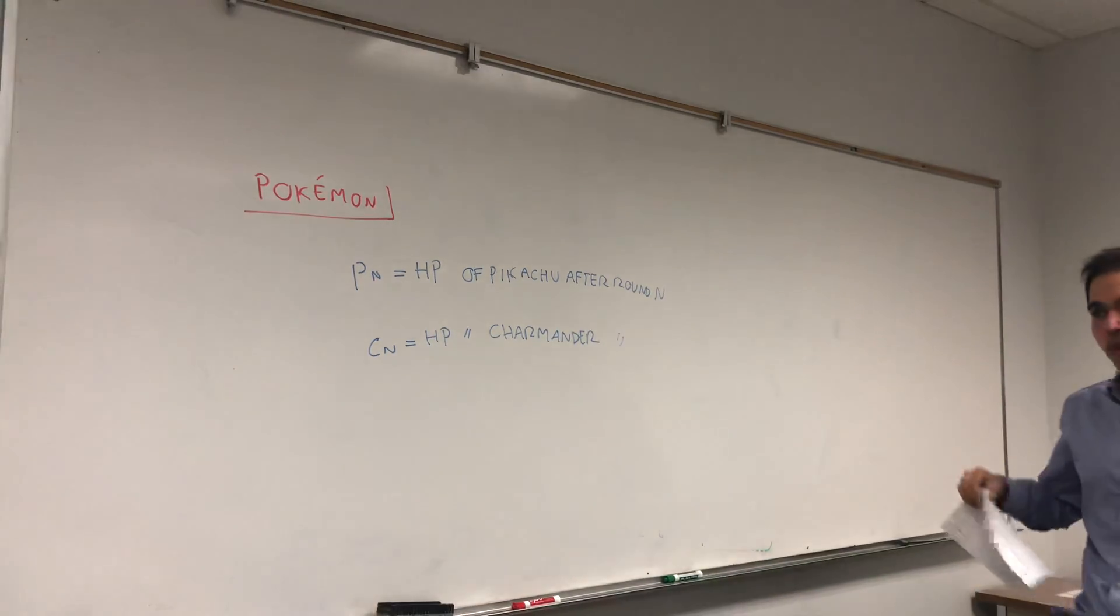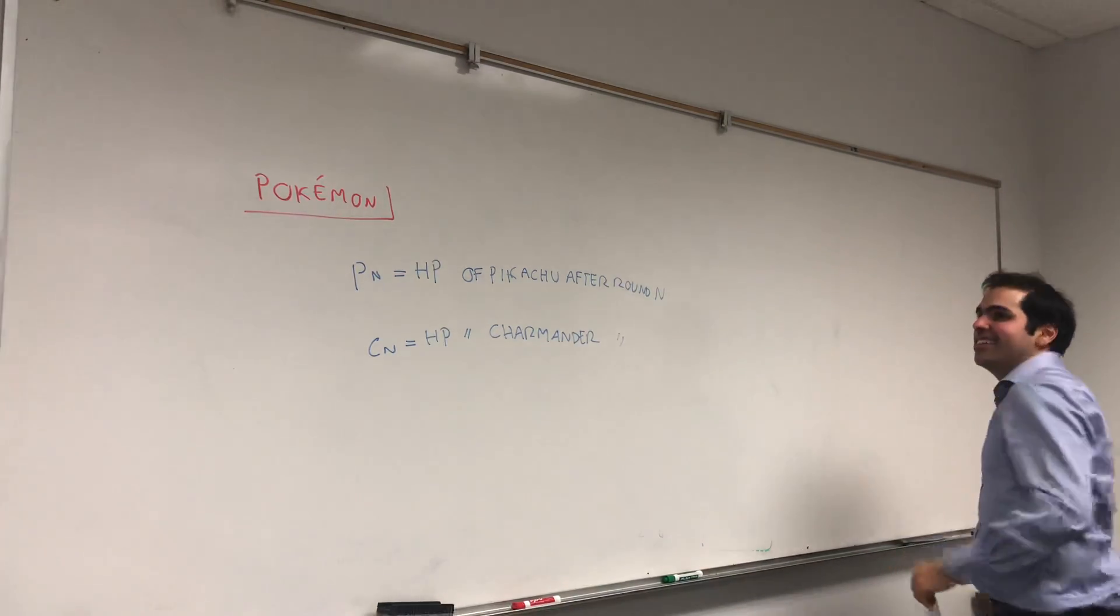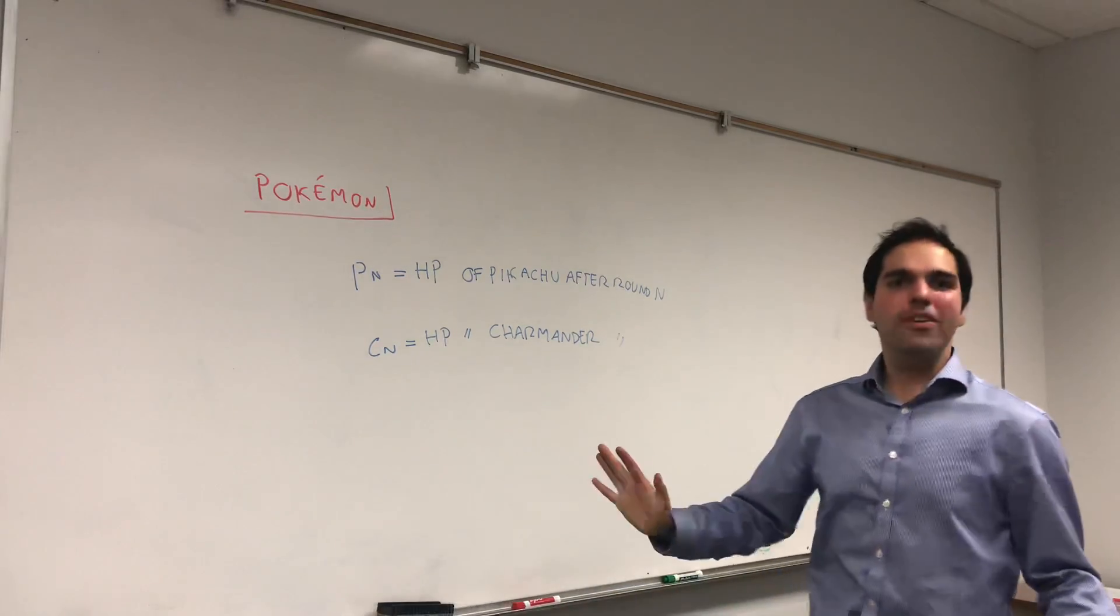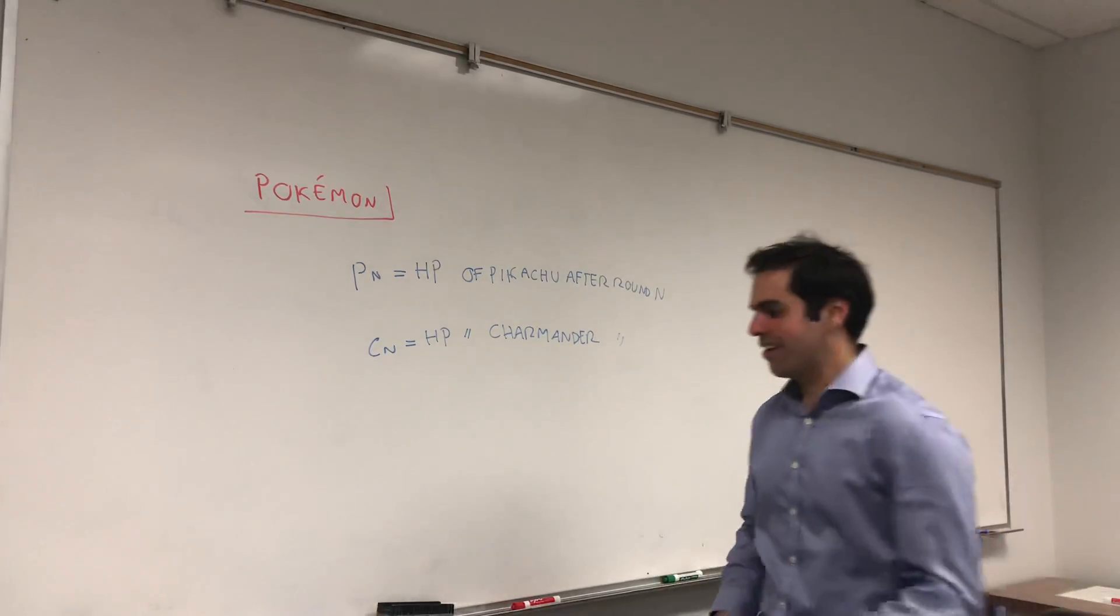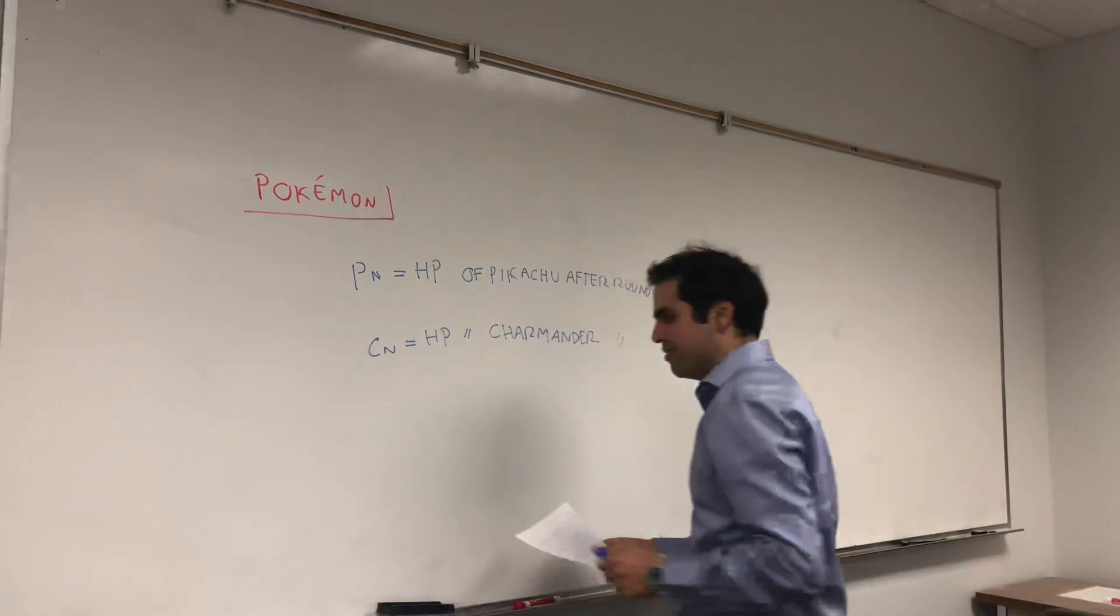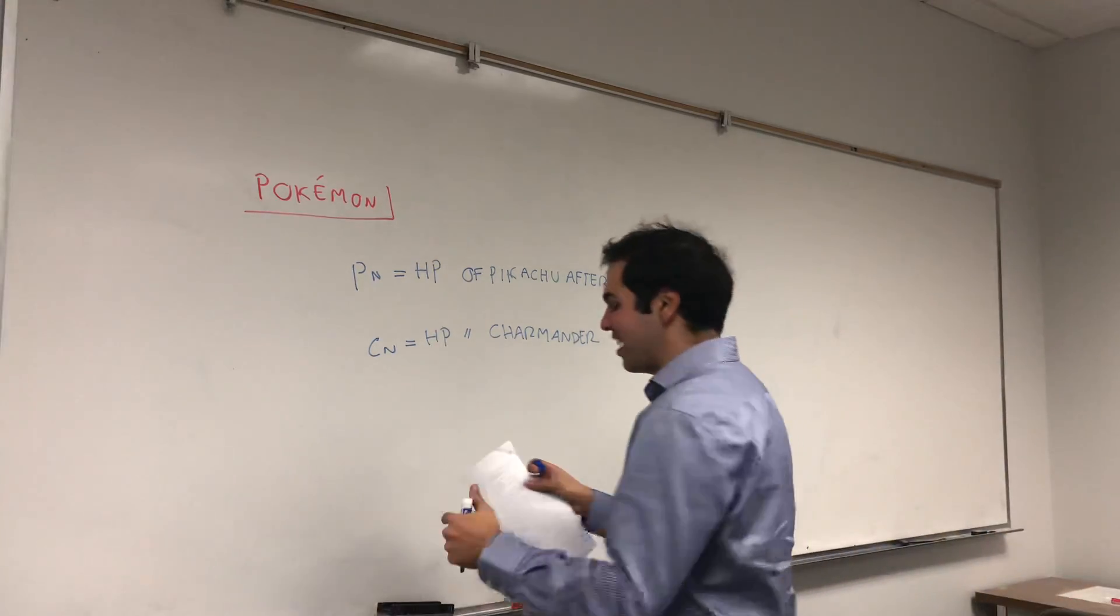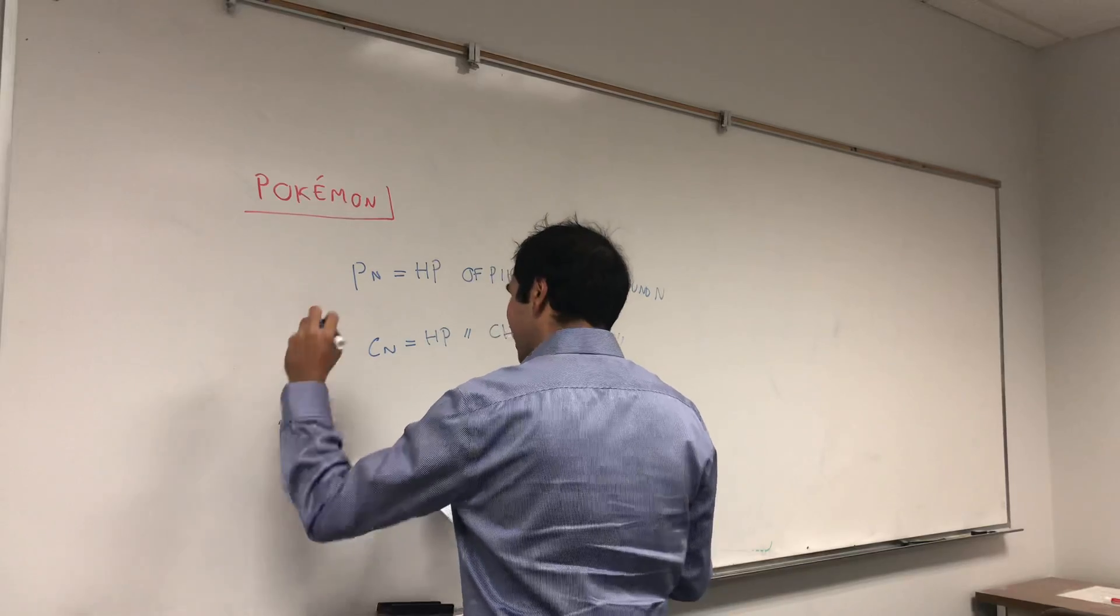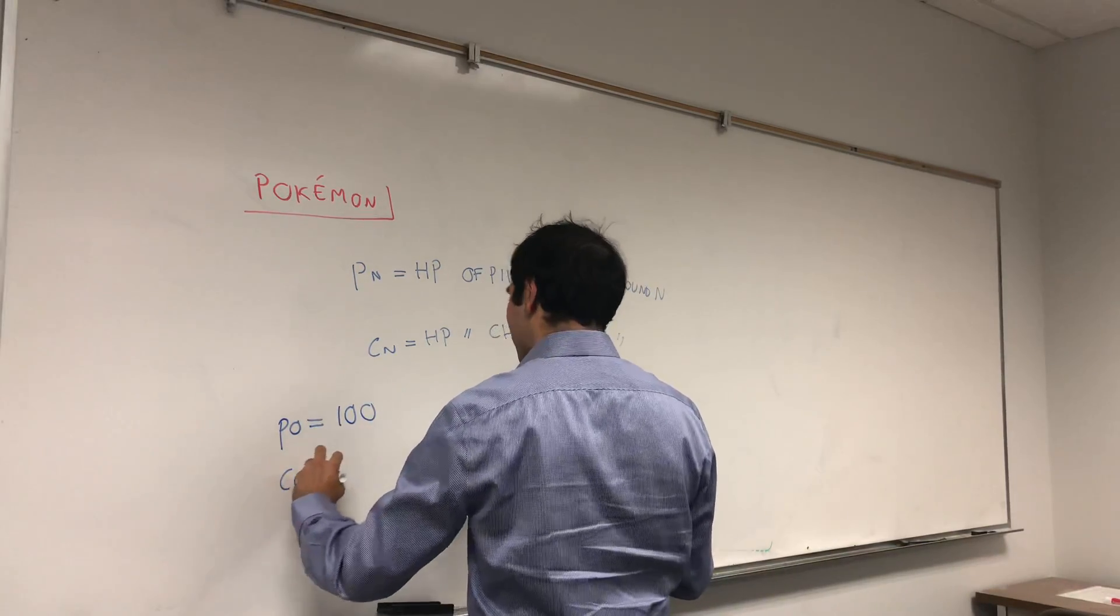CN is the HP of Charmander after round N. Assume we have those two Pokemons that battle with each other and PN and CN represent their life points. In particular, if a life point goes to zero, then we're at the end of the battle because the Pokemon goes back to their Pokeball and recovers. And assume that initially the HP of Pikachu is 100 and the HP of Charmander is 50.